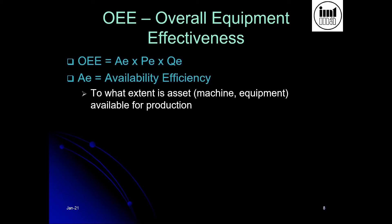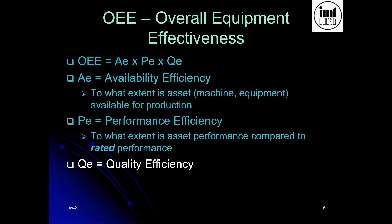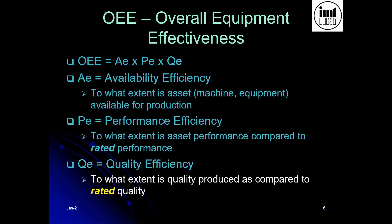For example, if it's a metal cutting machine, how much time is the machine actually available to cut chips? Or if it's a molding machine, how much time is it actually able to perform its operational molding? Availability is the extent to which the asset is available for production. PE is performance efficiency — to what extent is the asset's performance compared to the rated performance? This rated performance refers to its optimum or optimized performance. So the asset is first available, then it performs at its optimum level.